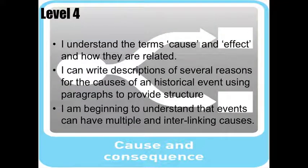So a level four in the cause and consequence skill. Level four being for Plimstock School students the level where one would expect students of an average ability to be by the end of year seven. They understand the term of cause and effect and how they are related. They can write descriptions of several reasons for the causes of an historical event using paragraphs to provide a structure for their written work.